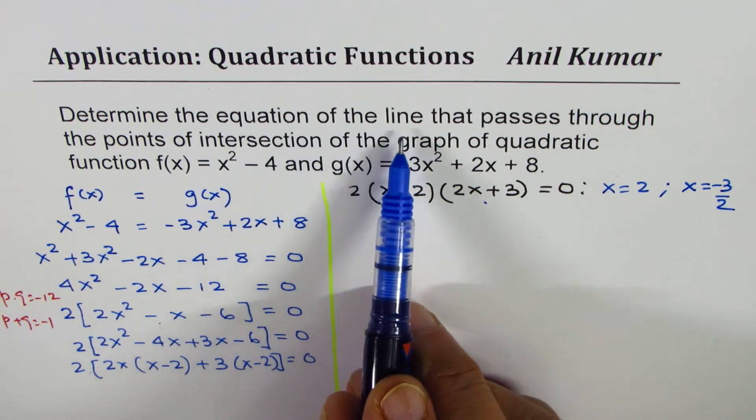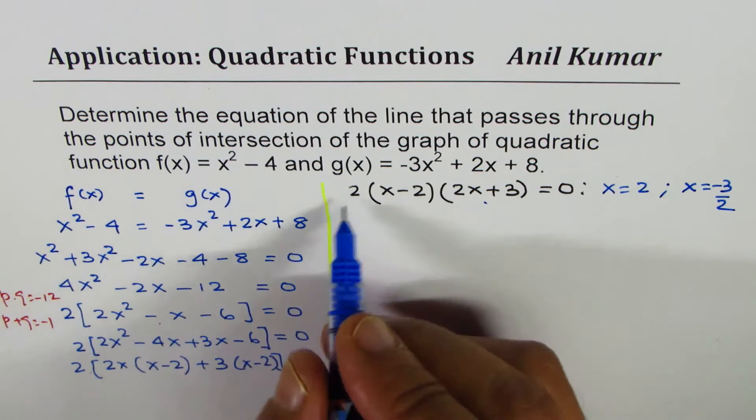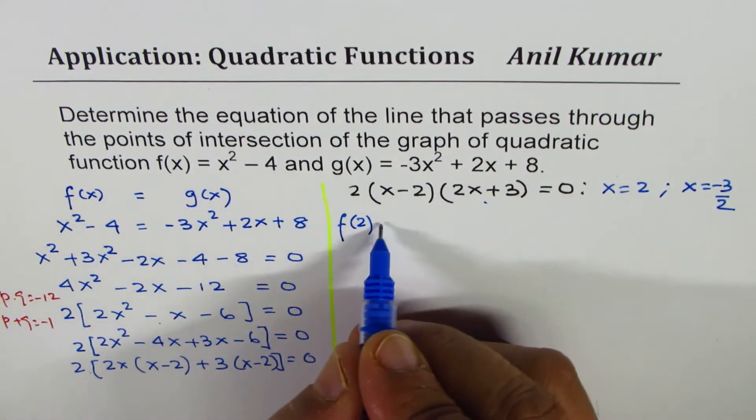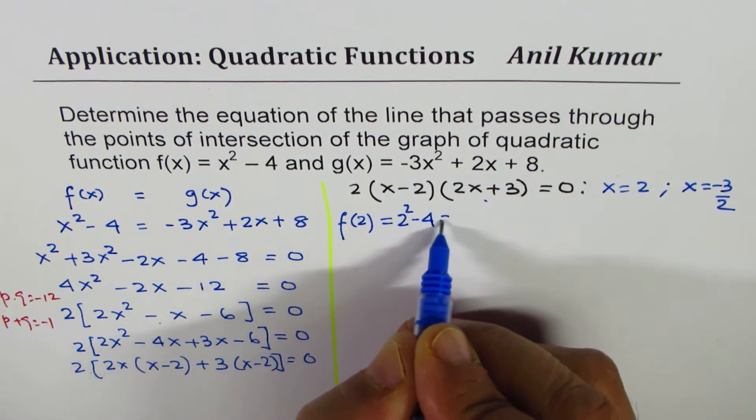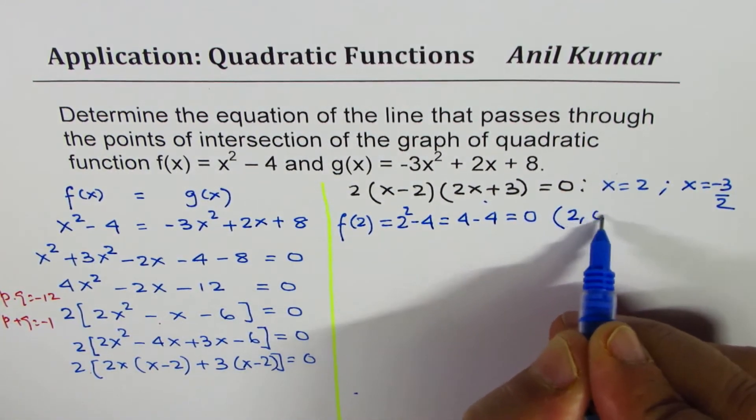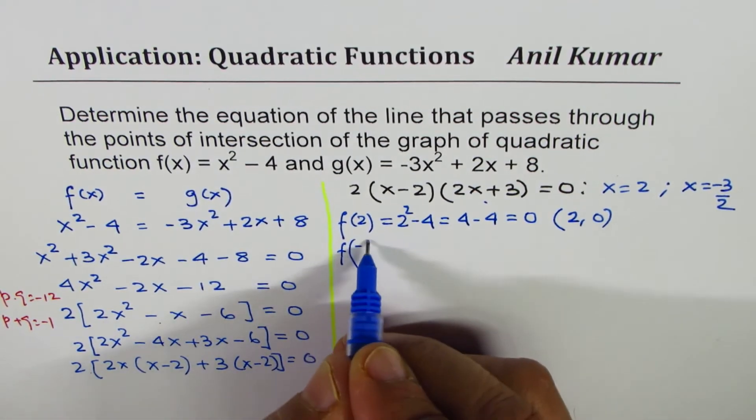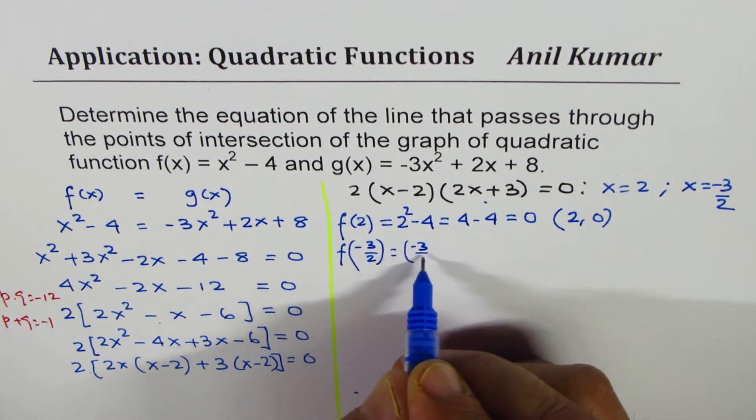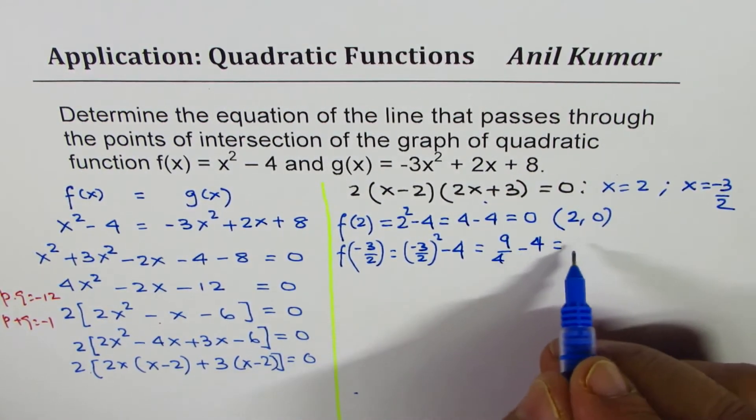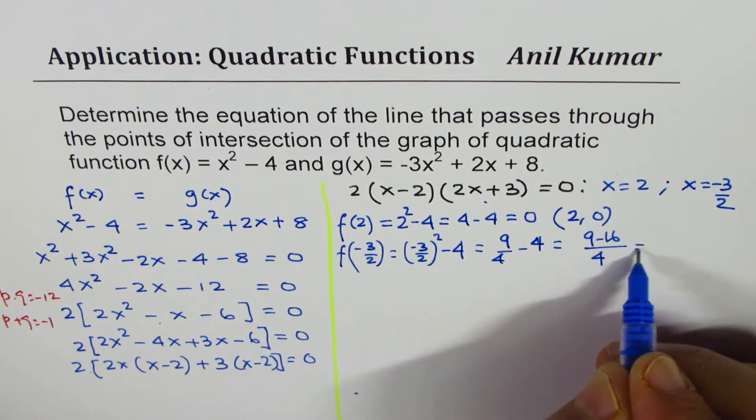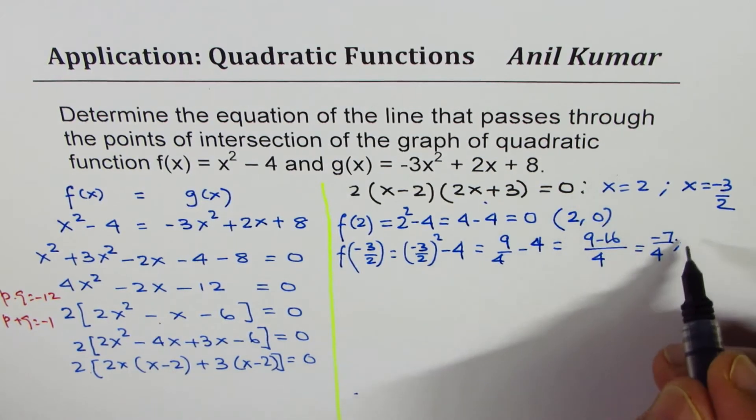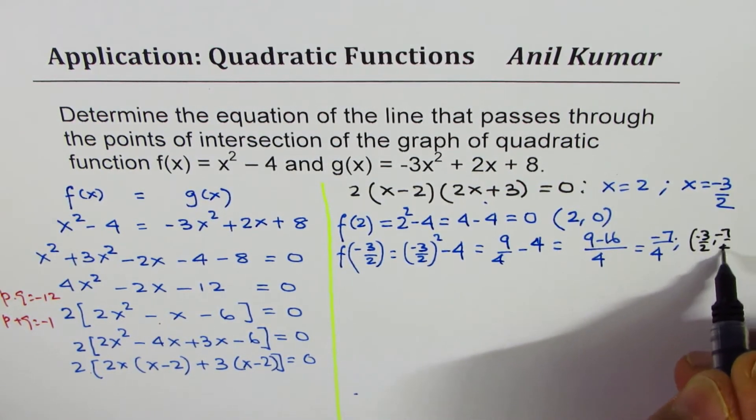Since we need to find the equation of the line, we need to find the y values also. Let's find the value of the function at 2 and at -3/2. For x = 2, f(2) = 2² - 4 = 0, so one point is (2, 0). The other one at -3/2 gives us (-3/2)² - 4 = 9/4 - 4 = -7/4. So the other point is (-3/2, -7/4).